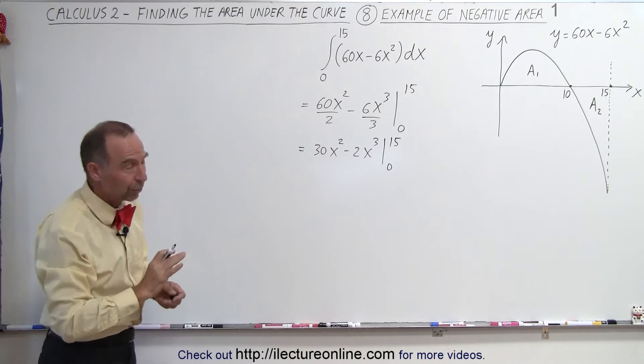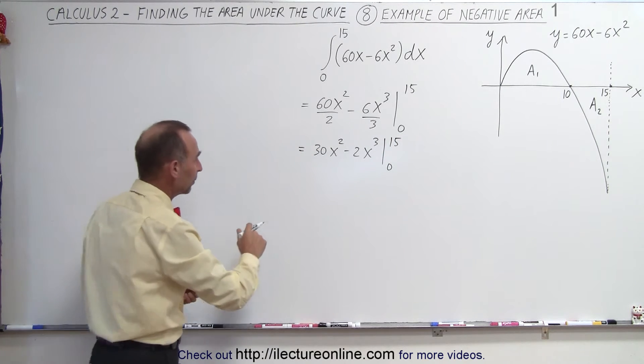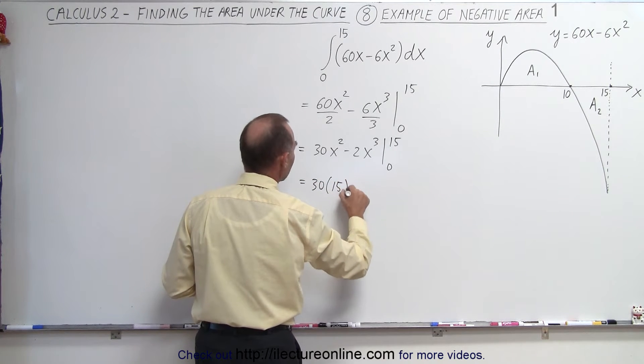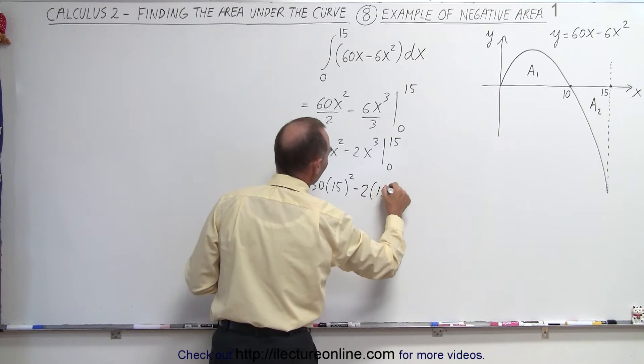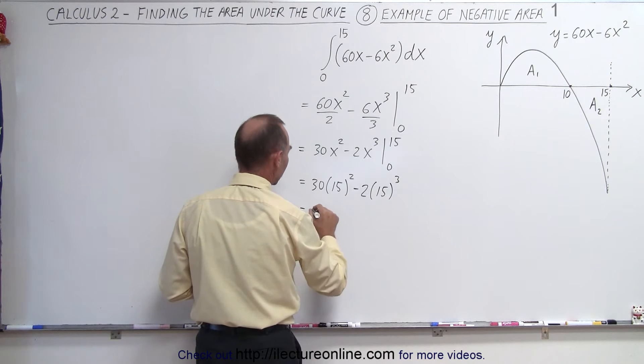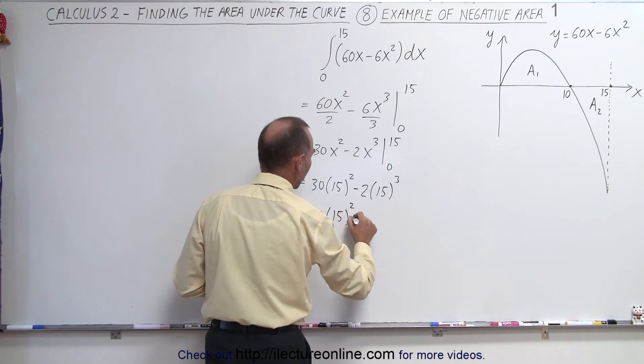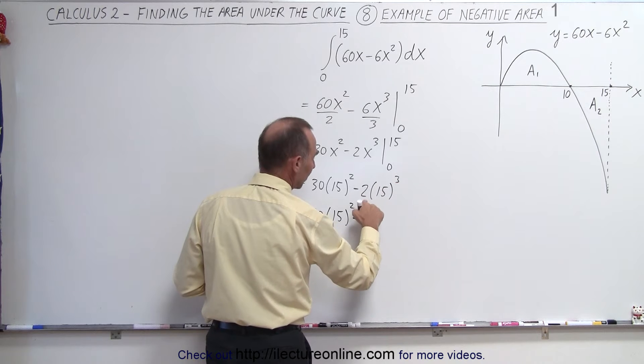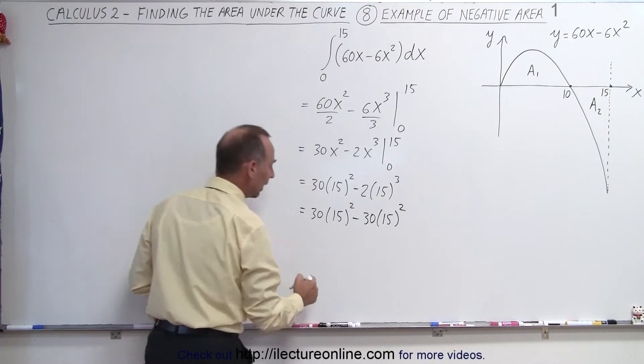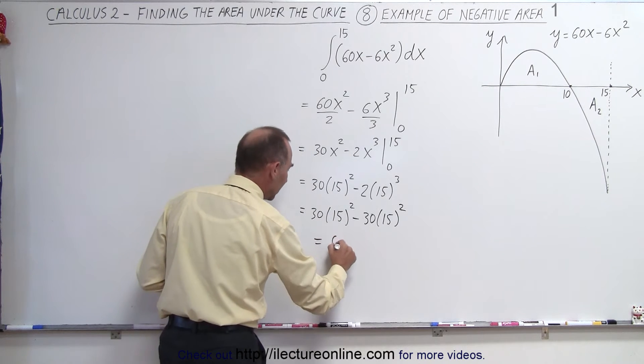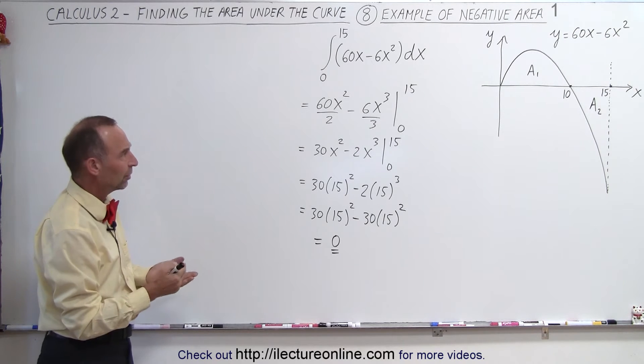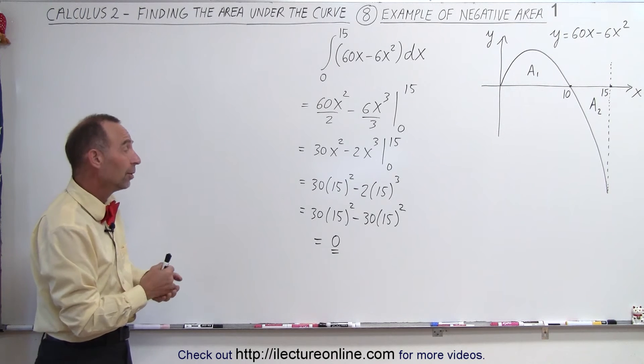And of course we can simplify that a little bit. This becomes equal to 30x² minus 2x³ from 0 to 15. And of course when we plug in the lower limit we don't get anything. When we plug in the upper limit we get the following. This is equal to 30 times 15² minus 2 times 15³. When you work that out, this is equal to 30 times 15² minus, if I take one of these 15s and multiply it times 2, I get 30 times 15². And notice that is exactly equal to 0. And so you'd be kind of perplexed and go, wow, that's 0, how can that be? How can the area underneath the curve be 0?